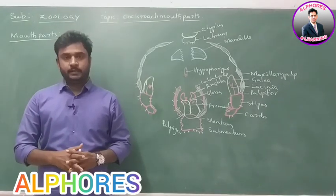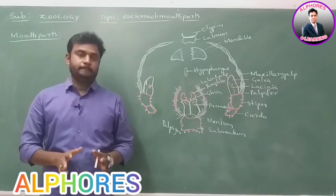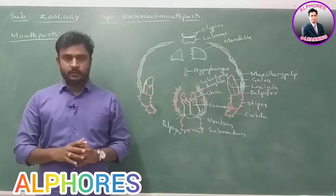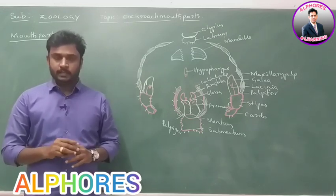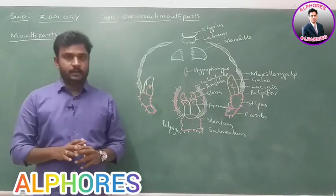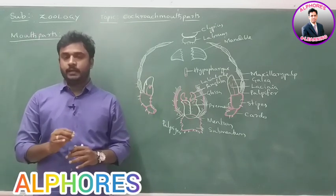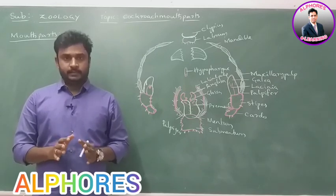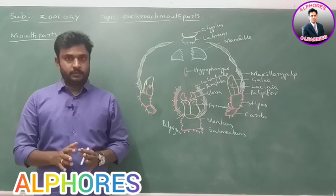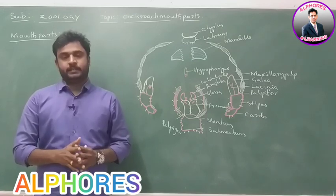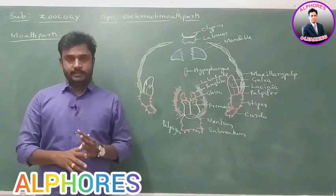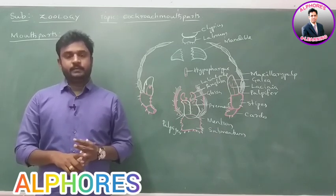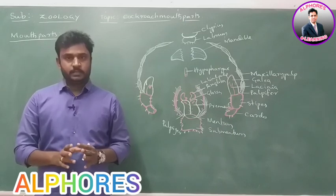Periplaneta americana introduction is completed. The body is divisible into three regions called tagmata — head, thorax, and abdomen. The head of cockroach, which we finished yesterday, consists of sclerites, sensory organs, and sensory appendages. We discussed the total structure of the head.